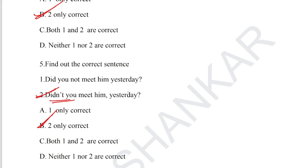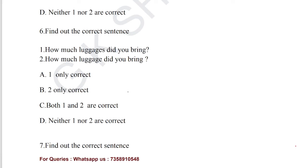Question number 6: find out the correct sentence, from the grammar portion on singular and plural. Statement 1: 'How much luggage did you bring?' Statement 2: 'How much luggage did you bring?' Luggage and baggage are always treated as uncountable nouns, so we must use 'luggage'. The second statement is correct. Option B, statement 2 only correct, is the answer for question number 6.